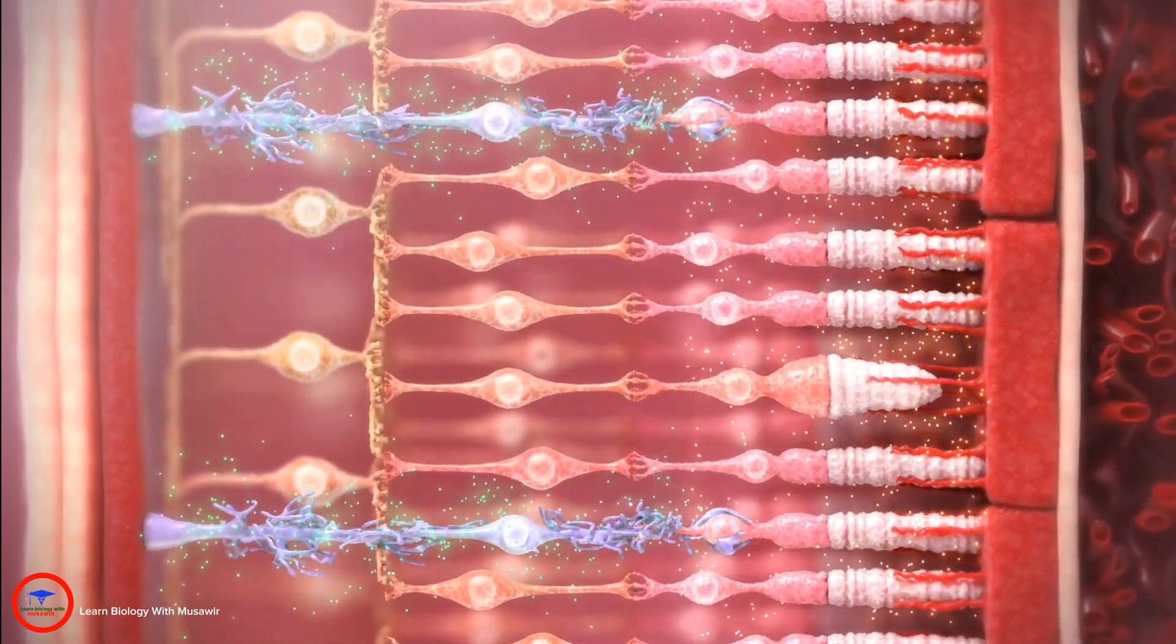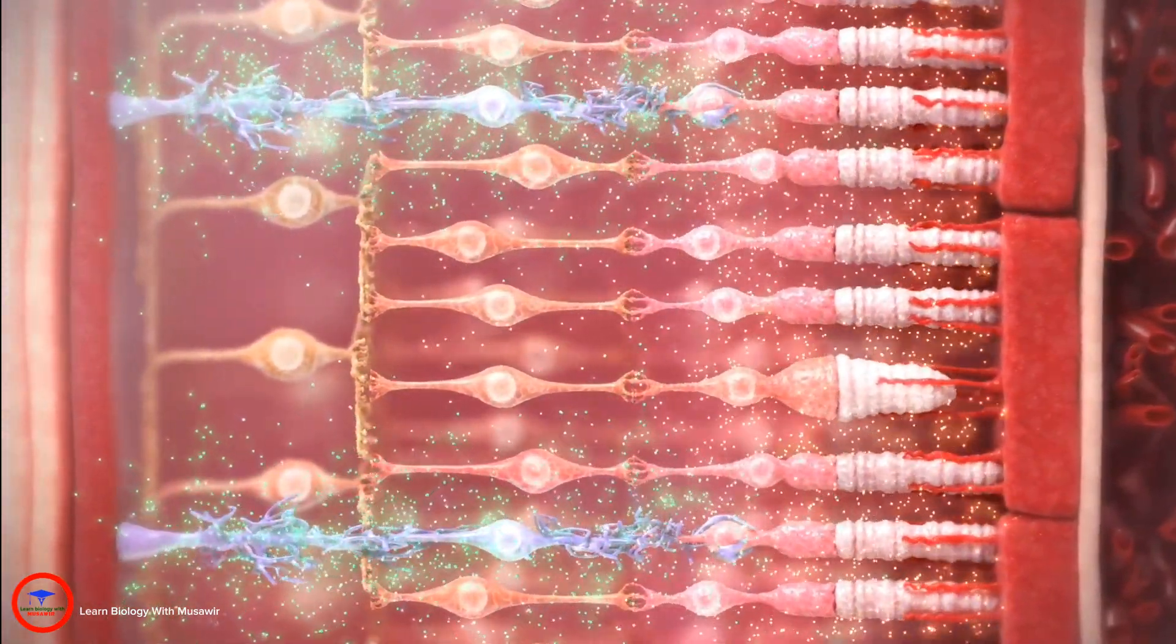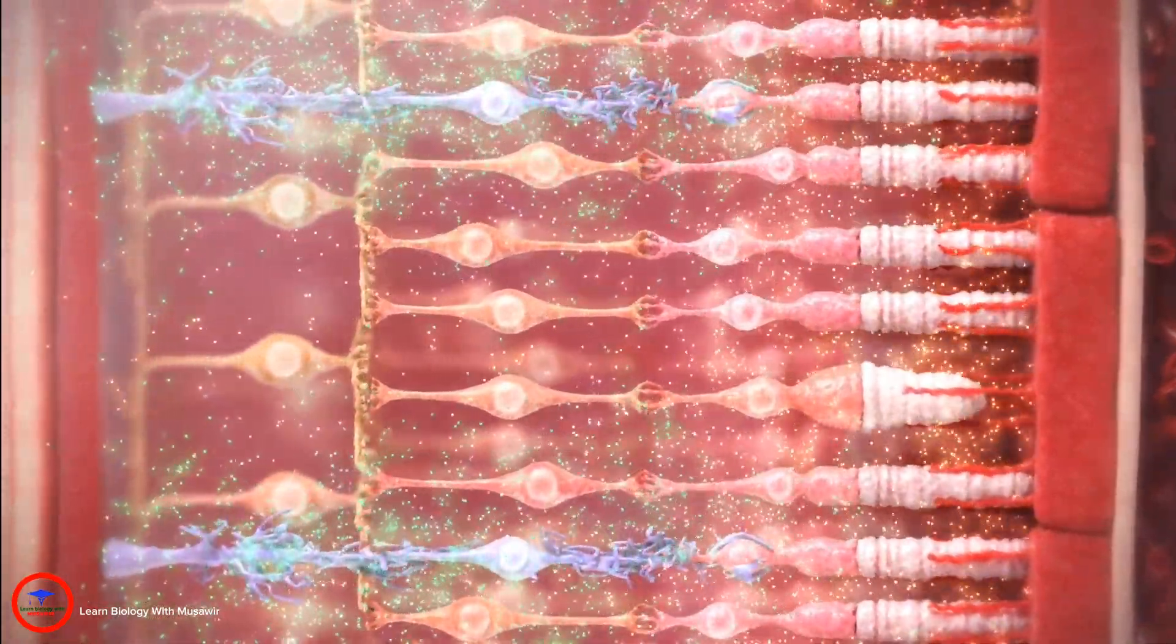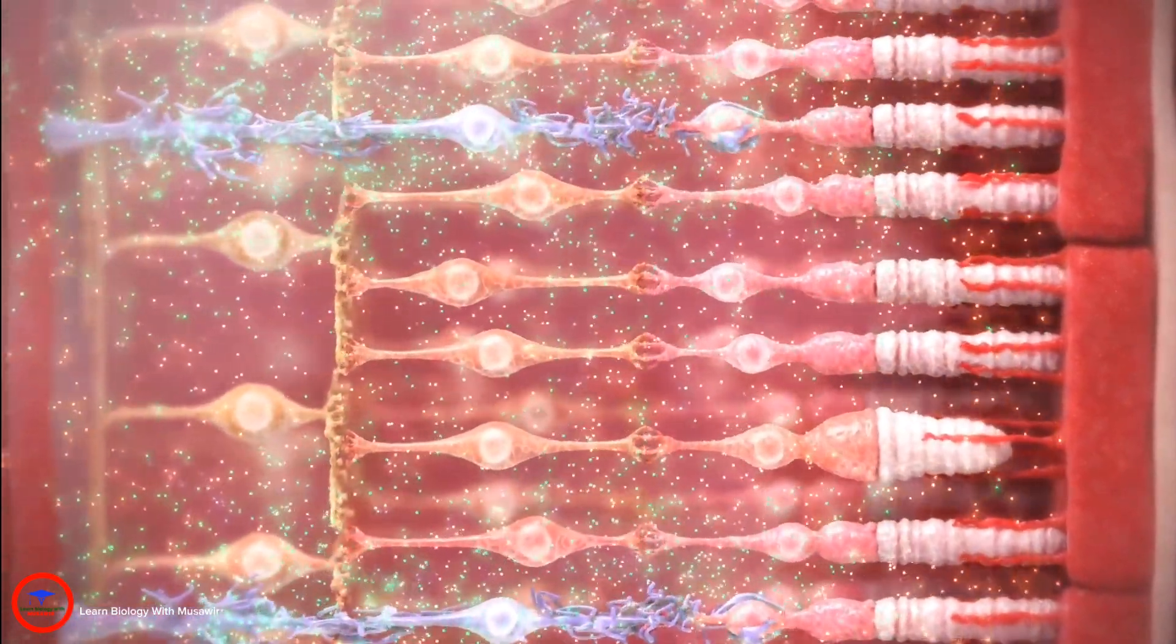Furthermore, the RPE, Muller-Glier, and photoreceptors secrete an array of endogenous neurotrophic factors absolutely critical in reducing the stresses on the different cells, maintaining retinal homeostasis and health.